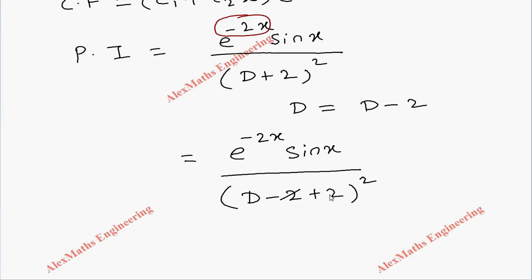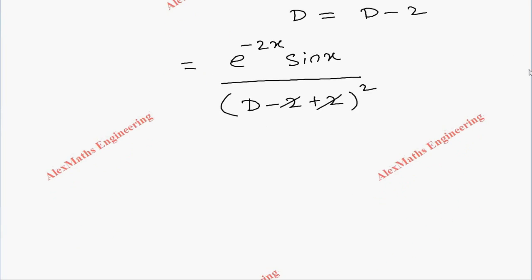We have left with D² in the denominator. So D² stands for differentiation, but it is in the denominator, so it stands for 1/D, which means integration. So we have to integrate twice.